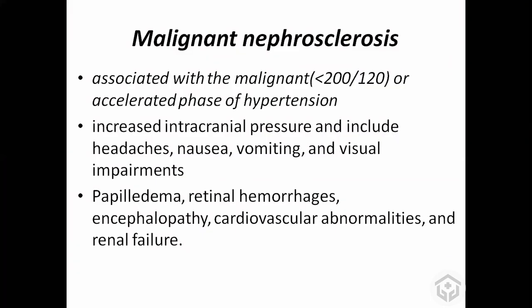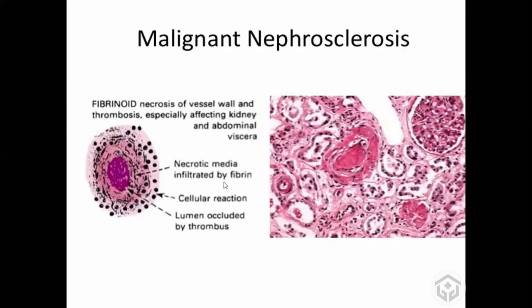The other type is malignant nephrosclerosis, associated with malignant hypertension — blood pressure more than 200 systolic and more than 120 diastolic. This is concerning because such high pressure damages end organs: kidneys, brain, and heart. Patients can develop heart failure, renal failure, encephalopathy, low GCS, fits, and eye damage. This necrosis of the vascular media is fibrinoid necrosis, and thrombosis of the lumen also occurs.